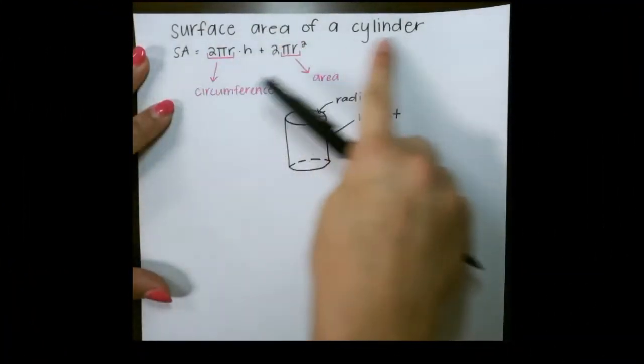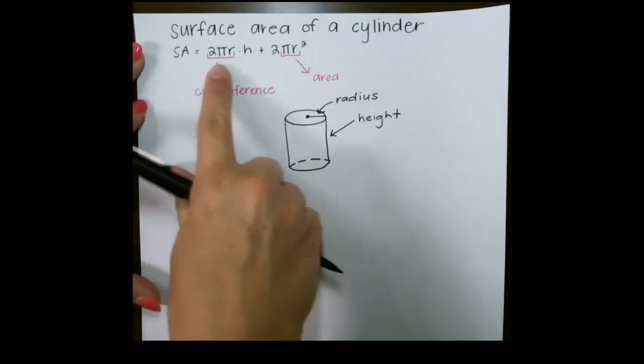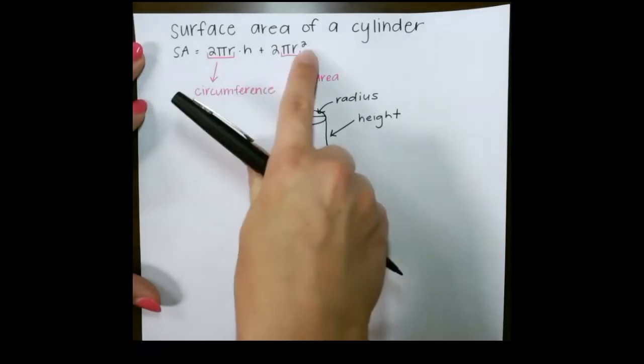Today, let's look at surface area of a cylinder. The formula for surface area is surface area equals 2 pi r times height plus 2 pi r squared.